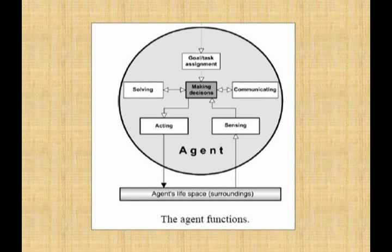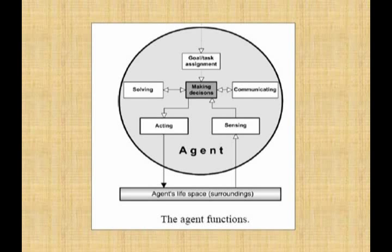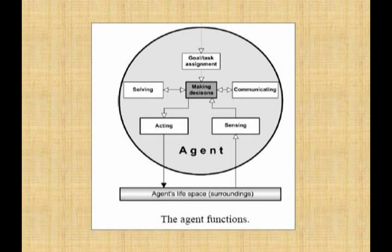Firstly, a given task is assigned to each agent. The agent then goes through its defined life cycle — that is, sensing, decision-making, and acting. During this process, it uses the support of solving, which provides solution proposals, and communicating with other agents as well as with human operators.